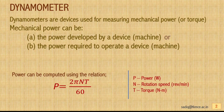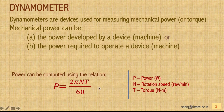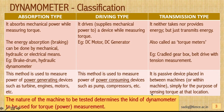Dynamometers are devices used for measuring mechanical power or torque. Mechanical power means the power that can be developed by a device or machine, or the power required to operate a machine. We know that power is a computed parameter based on the equation P = 2πNT, where N is the rotation speed in revolutions per minute and T is the torque in Newton meters.